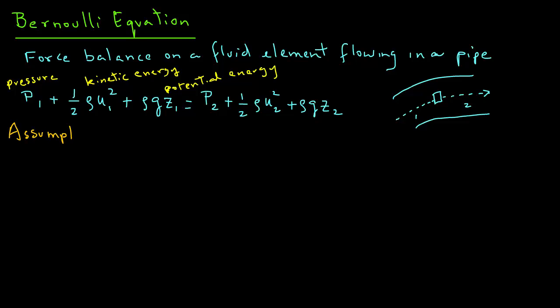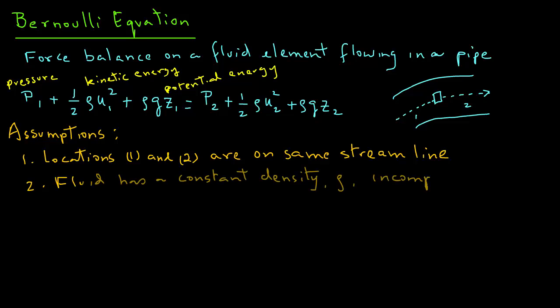Now, there are certain assumptions that are made to obtain this force balance that results in Bernoulli equation. One of them is that the locations 1 and 2 are on the same streamline. Second, that the fluid has a constant density. The density does not change. And also, it is incompressible, which is true for liquids.